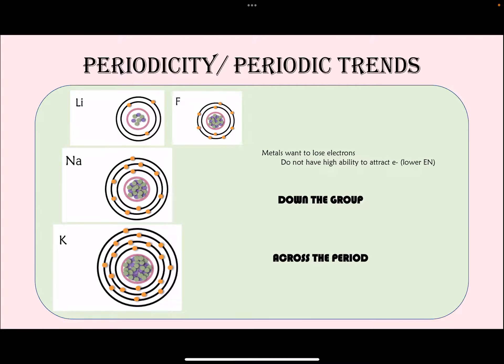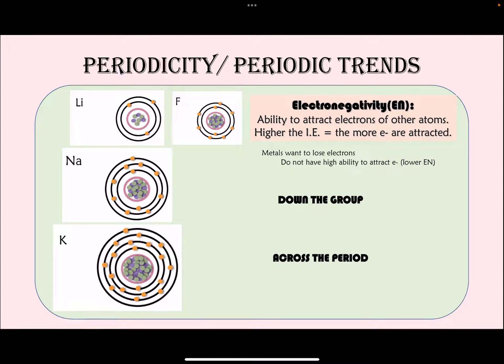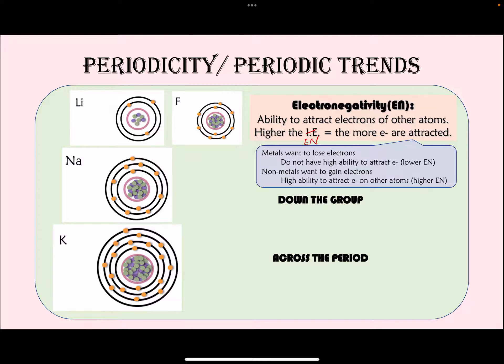Now let's talk about electronegativity, which is the ability to attract the electrons of other atoms. High electronegativity means a greater ability to attract electrons. Metals want to lose electrons — they do not want to attract other electrons — so they have low electronegativities. Non-metals want to gain electrons and will attract electrons of other atoms, so they have high electronegativities.